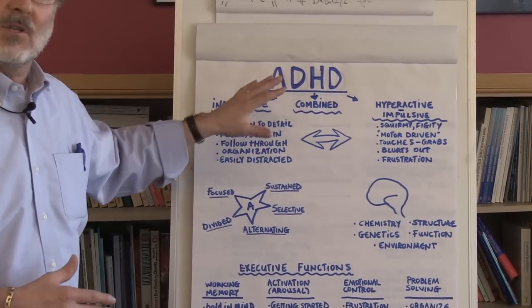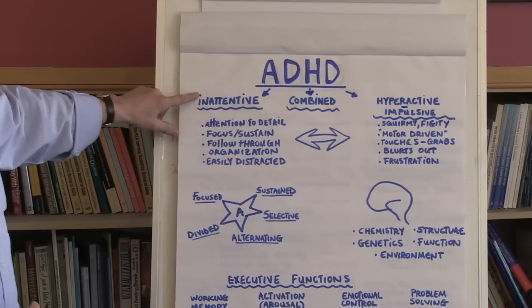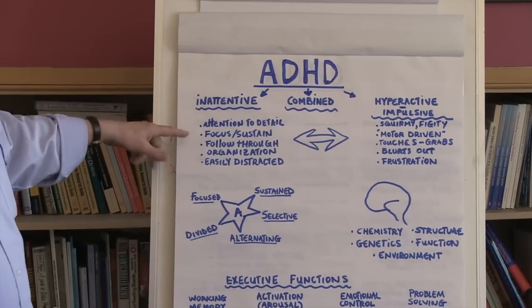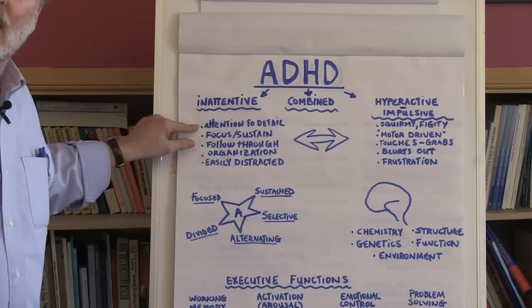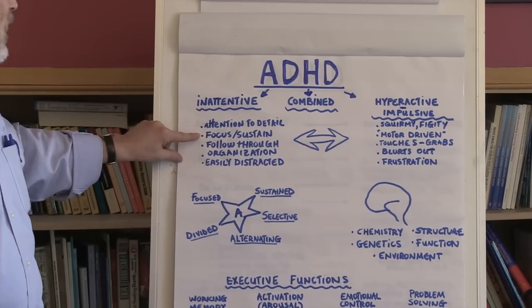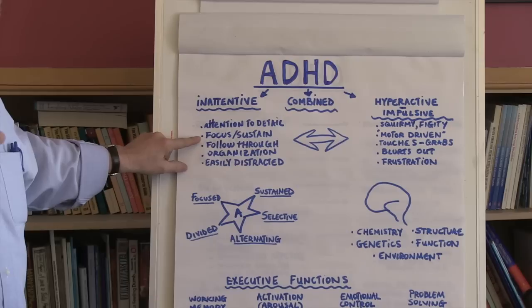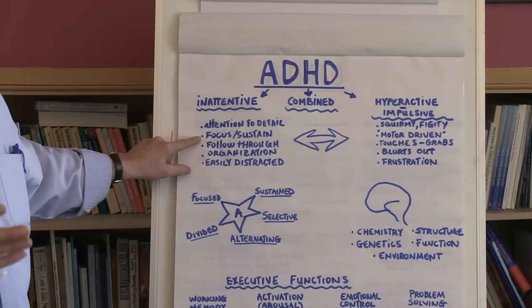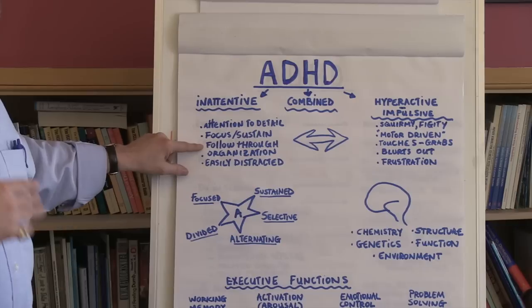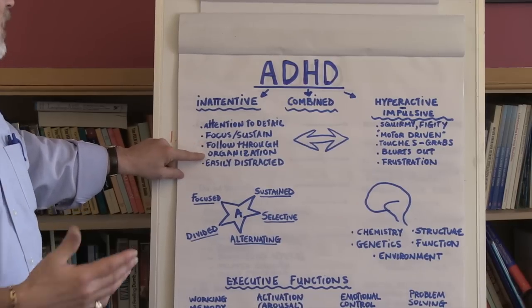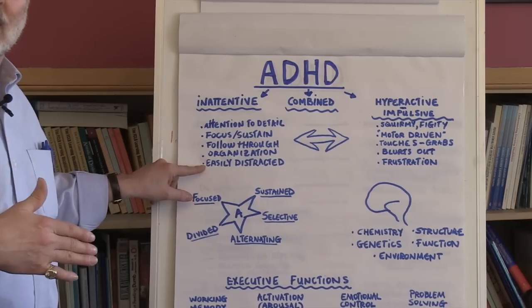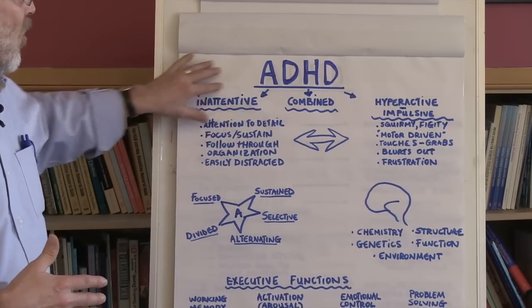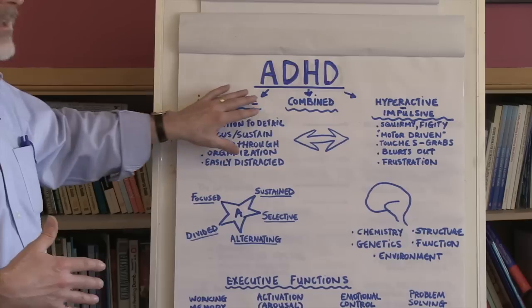Let's look at each of those individually. The inattentive ADHD type often manifests itself in a child having difficulty paying attention. Sometimes they pay attention, but the focus is off or they can't sustain attention for very long. They have difficulty following through with activities, they're not particularly well organized, and they're easily distracted. That's really the hallmark of ADHD inattentive type.